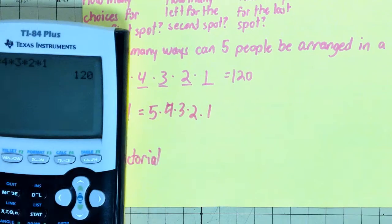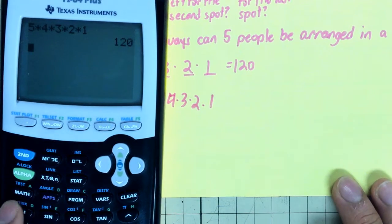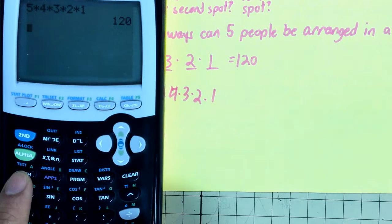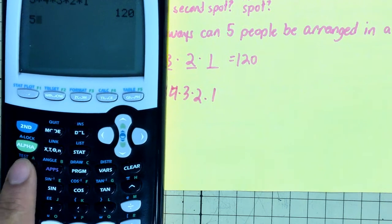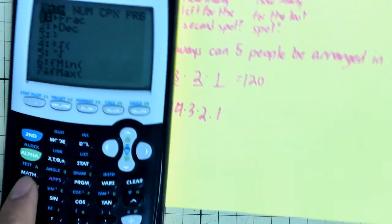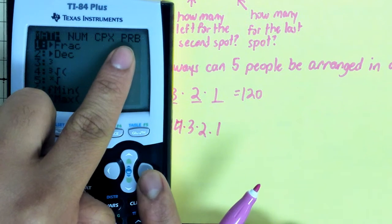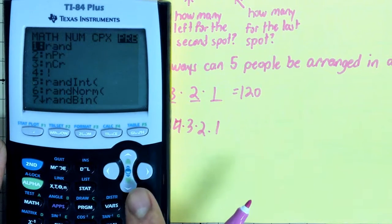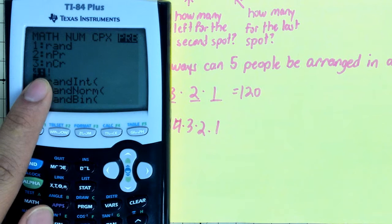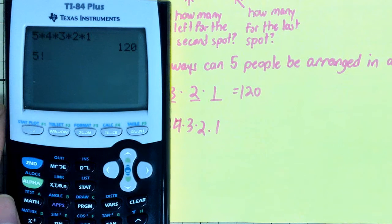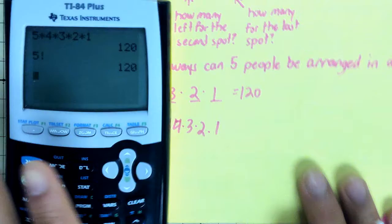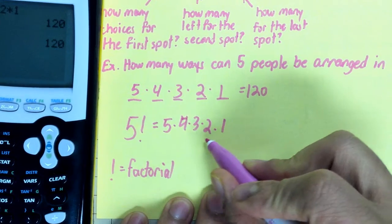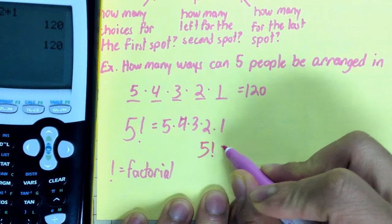So in your calculator to find factorial, you press math. So here's number five. Now I press math over here. I move over to PRB, which stands for probability. And I pick number four, that exclamation point. So five factorial, hit enter. Five factorial gets me 120.